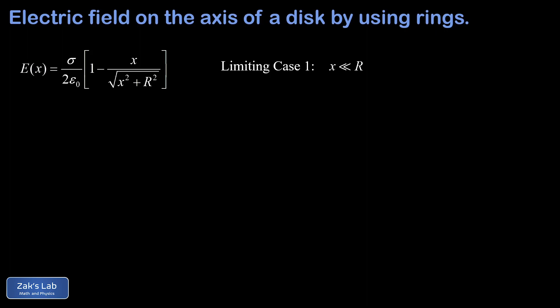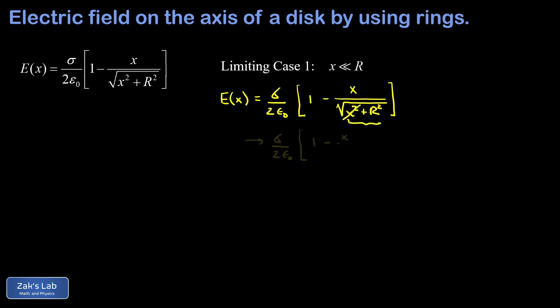First, we take the small x limit — when x is much less than R, meaning we're very close to the disk compared to its size. In this limit the field should appear to be due to an infinite sheet of charge. Inside the square root, if x is much smaller than R, the x² term is negligible, so the square root reduces to just R. Then we have 1 minus x/R, and since x is much less than R, that fraction is nearly zero and negligible.